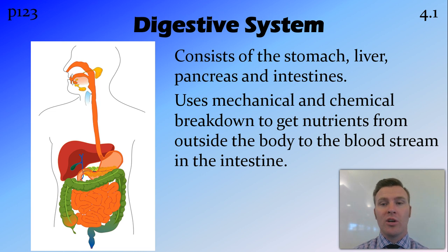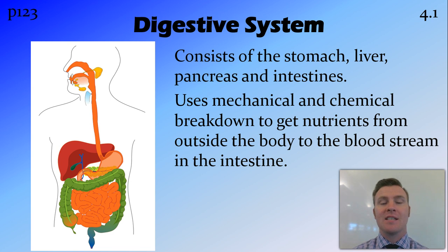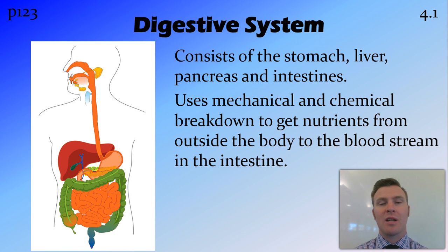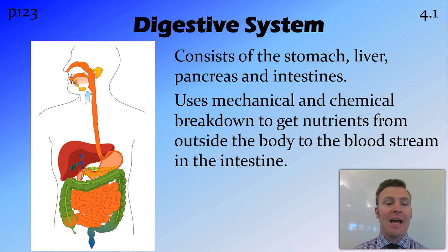Cellular respiration requires glucose, which it gets through the digestive system. We eat things, chew them — that's mechanical digestion — then they pass through the stomach into the intestines for chemical digestion, breaking down into nutrients absorbed by the surrounding capillaries. The digestive system consists of the stomach, liver, pancreas, and intestines. It is essentially one tube from your mouth to your anus, completely separate from everything else inside your body.